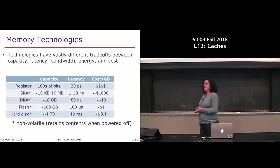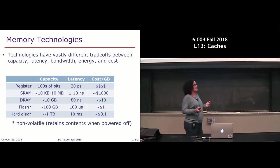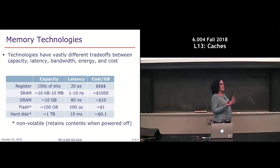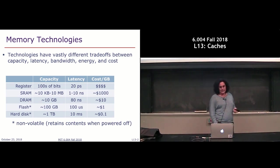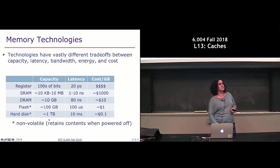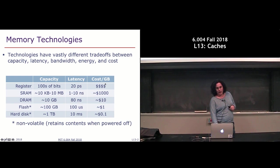It turns out that we've got a lot of memory technologies available to us, so we need to think about which combination or which one is best to use. If we look at this table, as you go down it, the different type of memory technology can offer significantly more capacity than those higher up. At the same time, the latency numbers grow significantly as you go down, and cost actually grows in the opposite direction.